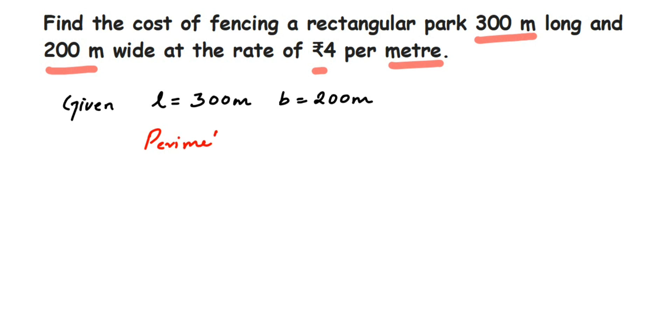So perimeter of park - the park is in the shape of a rectangle, so the formula will be 2 into (l plus b). This is equal to 2 into (length is 300 plus breadth is 200).